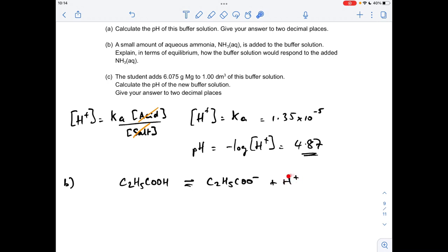It's going to accept H plus ions and form ammonium ions. So the upshot of that is the H plus concentration is going to drop. The equilibrium responds by the propanoic acid dissociating more and putting the H plus ions back. In other words, the equilibrium shifts to the right.